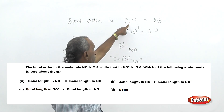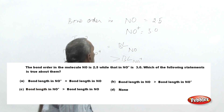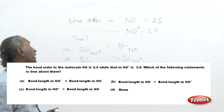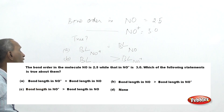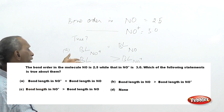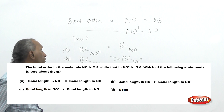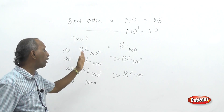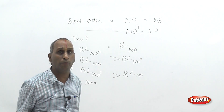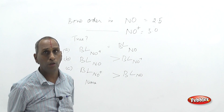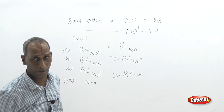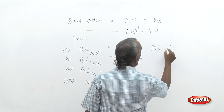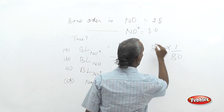Bond order in nitric oxide is 2.5, and bond order in nitrosyl cation NO⁺ is 3. We need to determine the relationship between their bond lengths. The key point to remember is that bond length is inversely related to bond order.